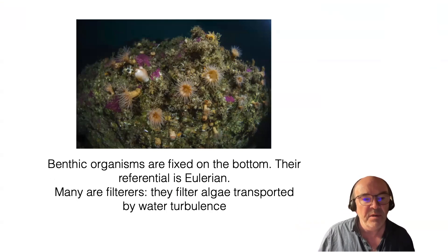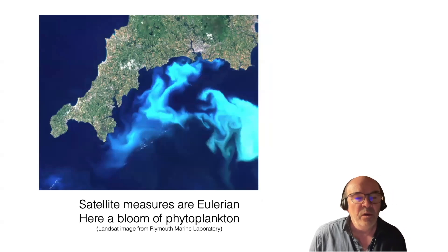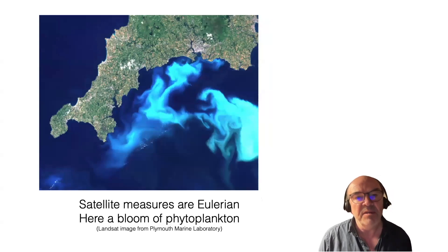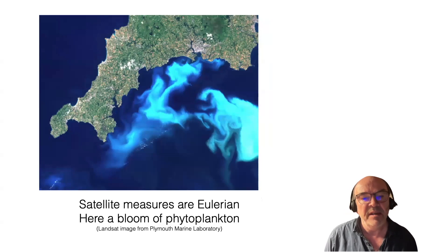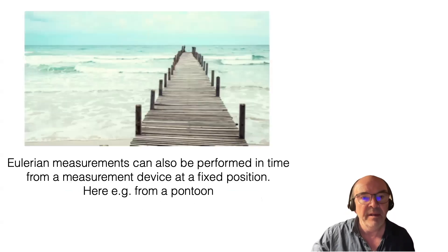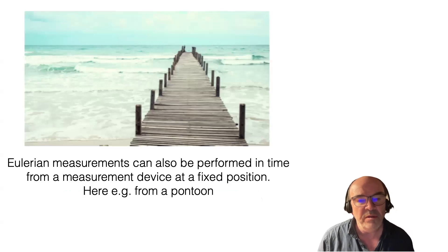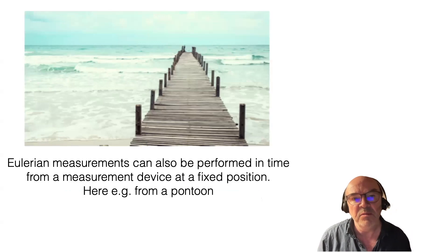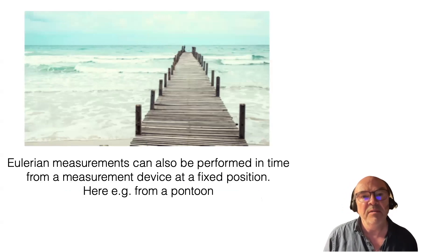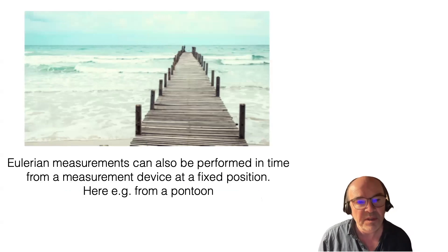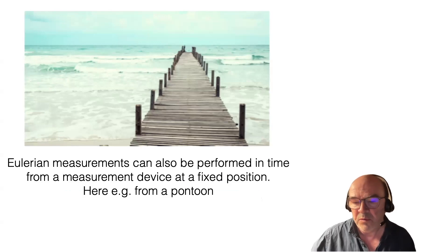Benthic organisms are filters — they filter algae that are transported by water turbulence. Also, satellite measurements, like a bloom of phytoplankton seen from space, belong to the Eulerian system. Similarly, when you do fixed-position measurements using a pontoon with a buoy attached to it, you are measuring in time at a fixed position, which is also Eulerian.